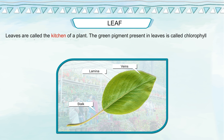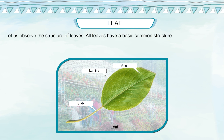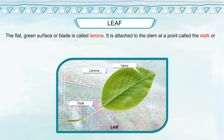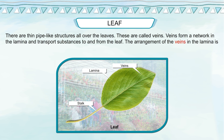Leaf: leaves are called the kitchen of a plant. The green pigment present in leaves is called chlorophyll and it makes food by photosynthesis. Different plants have leaves with different shapes and sizes. All leaves have a basic common structure. The flat green surface or blade is called the lamina. It is attached to the stem at a point called the stalk or petiole. There are thin pipe-like structures all over the leaves called veins, which form a network in the lamina and transport substances to and from the leaf.